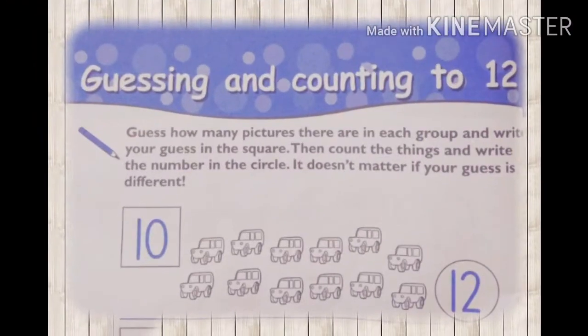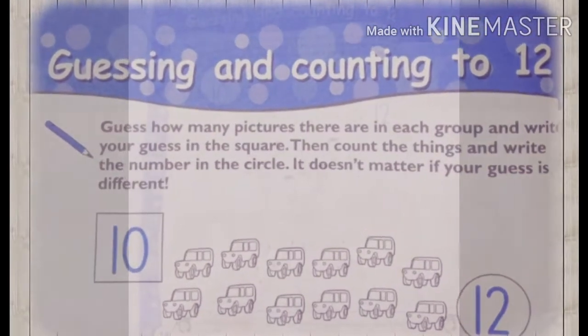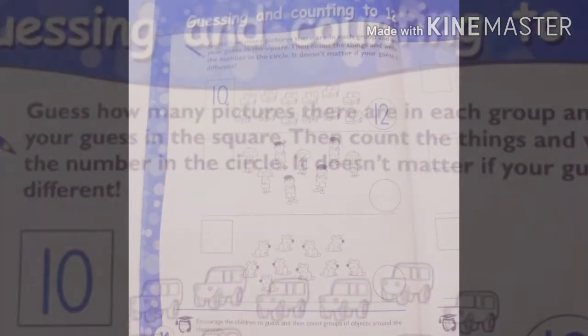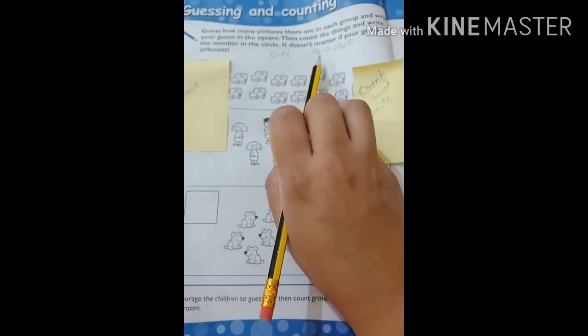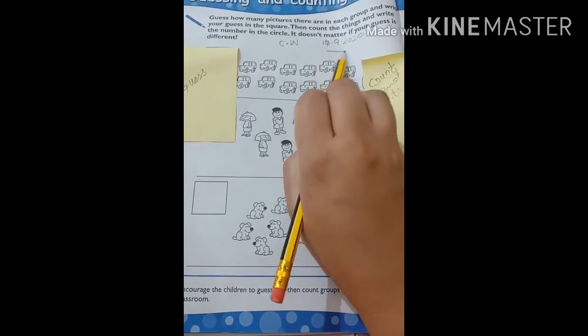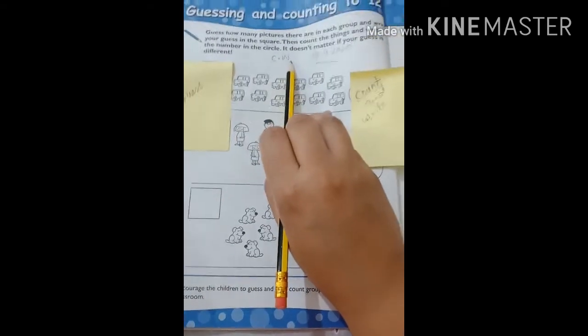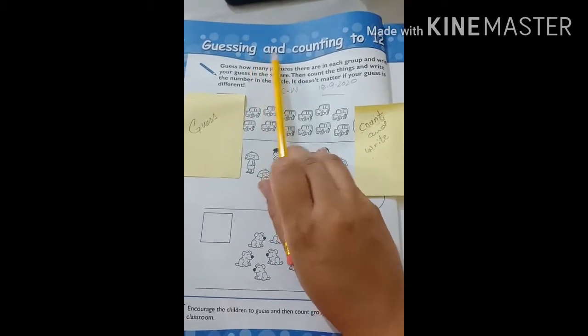Today's topic is guessing and counting to 12. Guessing and counting to 12 is your today's topic. First you will guess the number, and then you will write the accurate number. With the picture you will count them, and then you will write the numbers. Open your maths excel book page number 14. Start your classwork: CW 17.9.2020. Write down the date and classwork in your maths book.